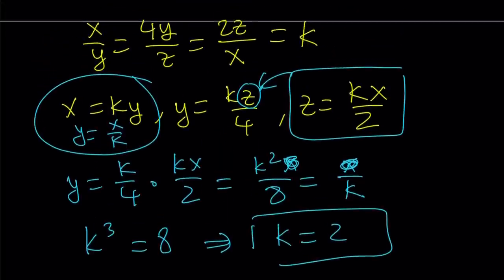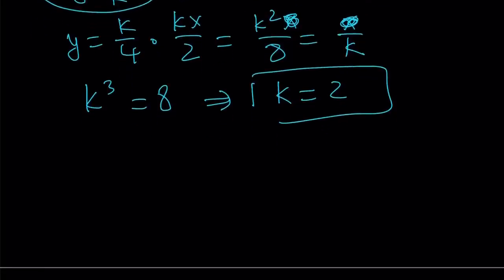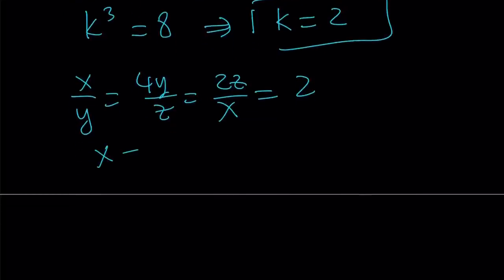What is that supposed to mean? It means that when all of these are equal to 2, it works, and 2 plus 2 plus 2 is equal to 6, which is the minimum value of this sum. Therefore, to sum it up, we can safely say x over y equals 4y over z equals 2z over x. And when they're all equal to 2, from here we get x equals 2y, and z equals 2y, and of course y equals y.